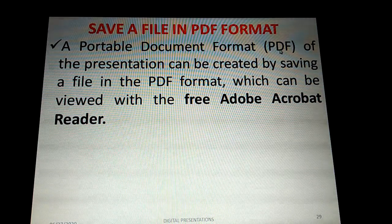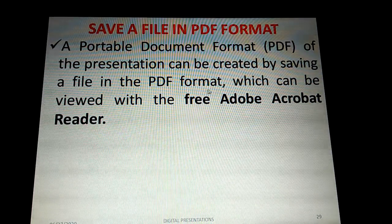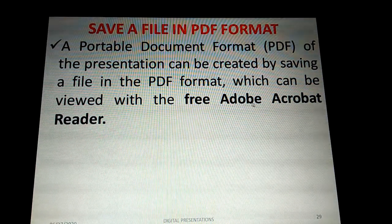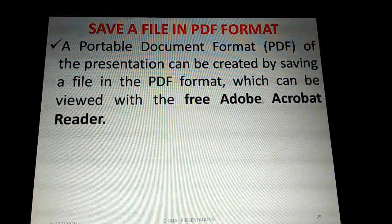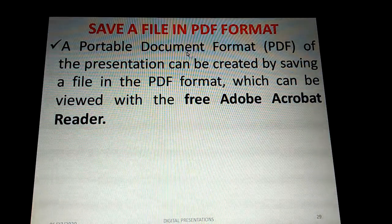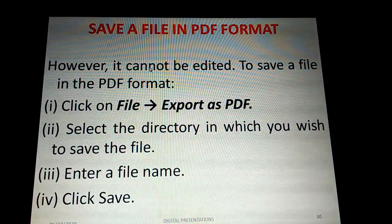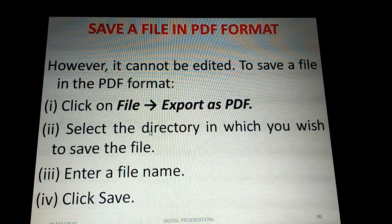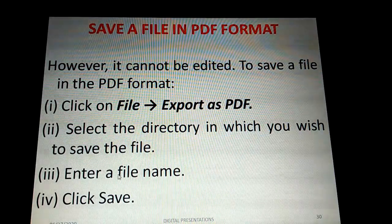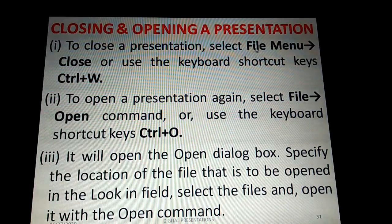To save a file in PDF format (Portable Document Format), click File > Export as PDF. PDF files can be viewed using the free Adobe Acrobat Reader software. Select the directory where you want to save the file, enter a file name, and click Save.